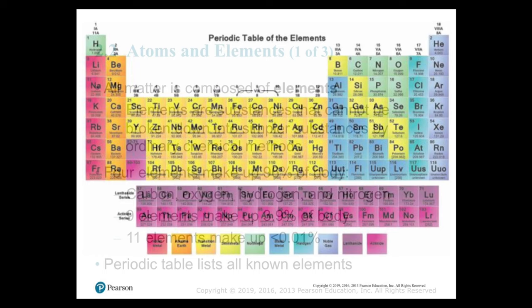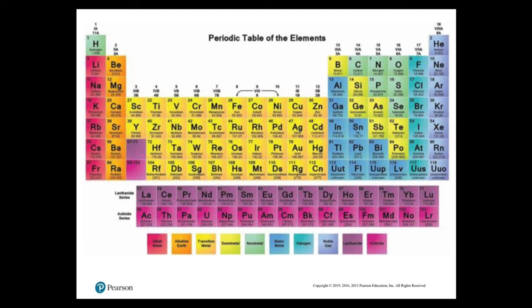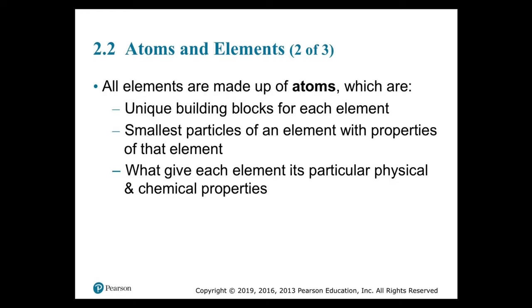The periodic table lists all known elements in increasing order of atomic number. The smallest stable units of matter are called atoms. Air, elephants, oranges, oceans, rocks, and people are all composed of atoms in varying combinations. The unique characteristics of each object — living or non-living — result from the types of atoms involved and the ways those atoms combine and interact. Atoms are the unique building blocks for each element — the smallest particles of an element with properties of that element — and they give each element its particular physical and chemical properties.